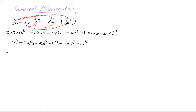Now let's check like terms. There's only one a³, so that stays. For a²b terms: minus 2a²b and minus a²b combine to minus 3a²b. For ab² terms: plus ab² and plus 2ab² combine to plus 3ab². And minus b³ has no partner. So we apply the associative property to group like terms.